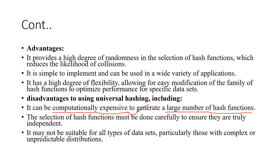Another disadvantage is that while selecting the random hash function, you must be careful that two elements do not get the same index. If two elements get the same index, what is the difference between linear probing and universal hashing? So careful selection is required — that is also a disadvantage. Third, universal hashing is not suitable for all data sets. If your data set is unpredictable or complex, it may not be supported well by universal hashing.